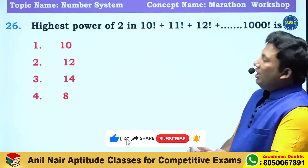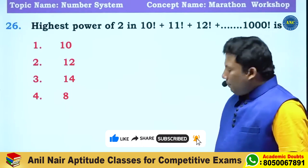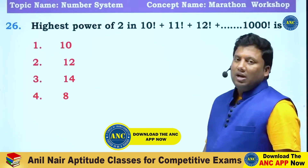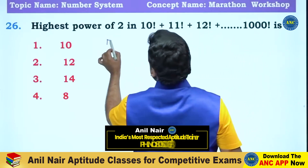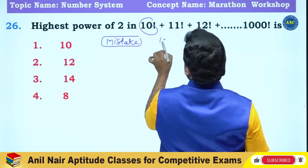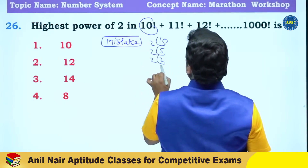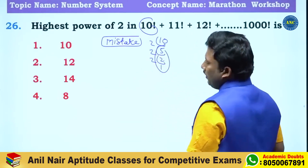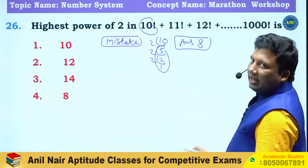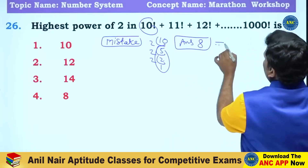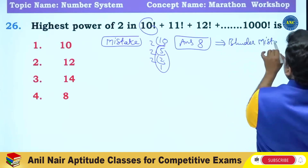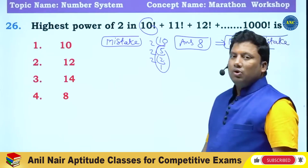What is the highest power of 2 in 10 factorial plus 11 factorial plus 12 factorial and so on up to 1000 factorial? Most students will make a mistake — they will take 10 factorial directly, compute 2 fives, 2 twos, 2 ones as 5 plus 2 plus 1, tick mark the answer as 8 without thinking mathematically. This is a blunder mistake.